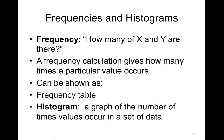Frequencies answer the question: how many of something is there? Recall that nominal data are things like names, labels, or categories of data. Examples include patient names, genders such as male, female, and unknown, and marital status — married, single, divorced, widowed. Frequencies are primarily shown in a table format and also in a histogram, which looks like a column chart. A histogram is a graph of the number of times values occur in a set of data — in other words, the frequency of the values. It is a visualization of the distribution of values.